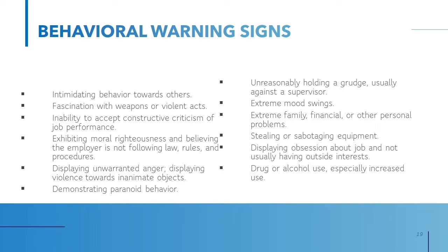Additional warning signs include: demonstrating paranoid behavior, unreasonably holding a grudge — usually against a supervisor — extreme mood swings, extreme family, financial, or other personal problems, stealing or sabotaging equipment, displaying an obsession about their job without outside interests, excessive complaining that appears irrational, and drug or alcohol use — especially increased use — which might indicate a warning sign for potential behavioral issues.